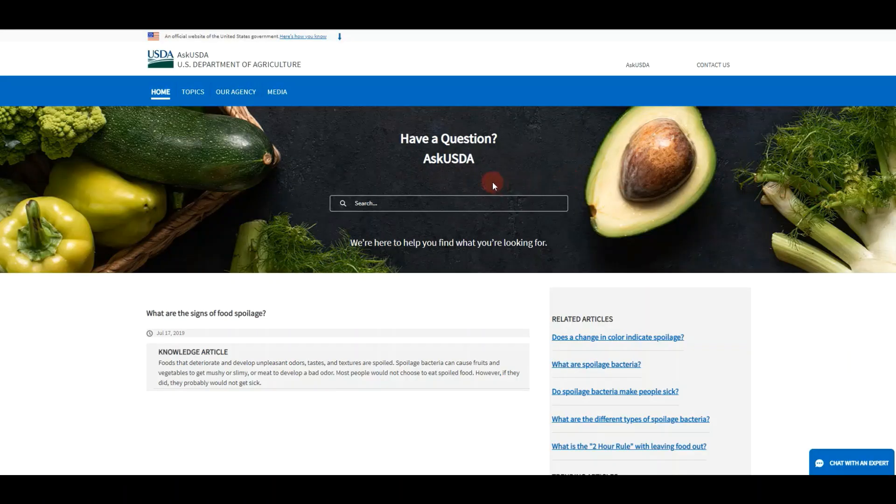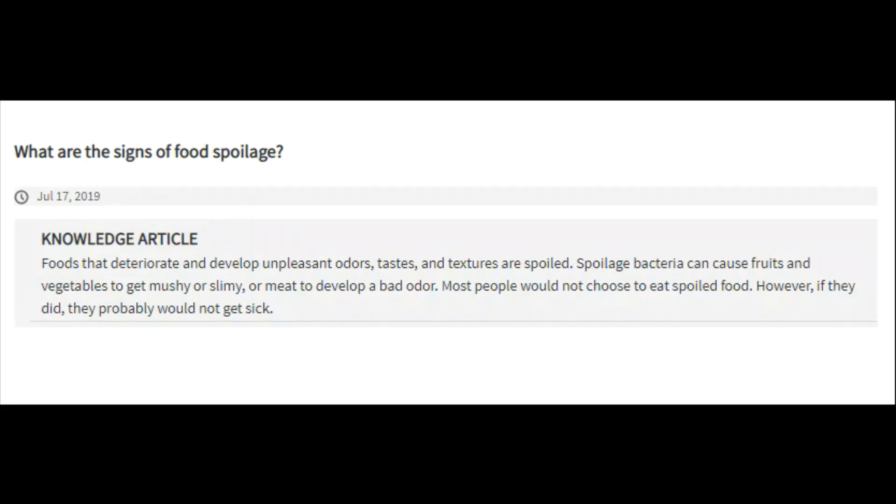This is a page from the USDA's website and it's called Have a Question. And right down here, they answer the question of what are the signs of food spoilage. And the answer reads as foods that deteriorate and develop unpleasant odor and taste and texture are spoiled. Spoiled bacteria can cause fruits and vegetables to get mushy or slimy or meat to develop a bad odor. Most people would not choose to eat spoiled food. However, if they did, they probably would not get sick. So the whole point behind this is that spoilage bacteria, as unpleasant as it may be, will not really harm you.